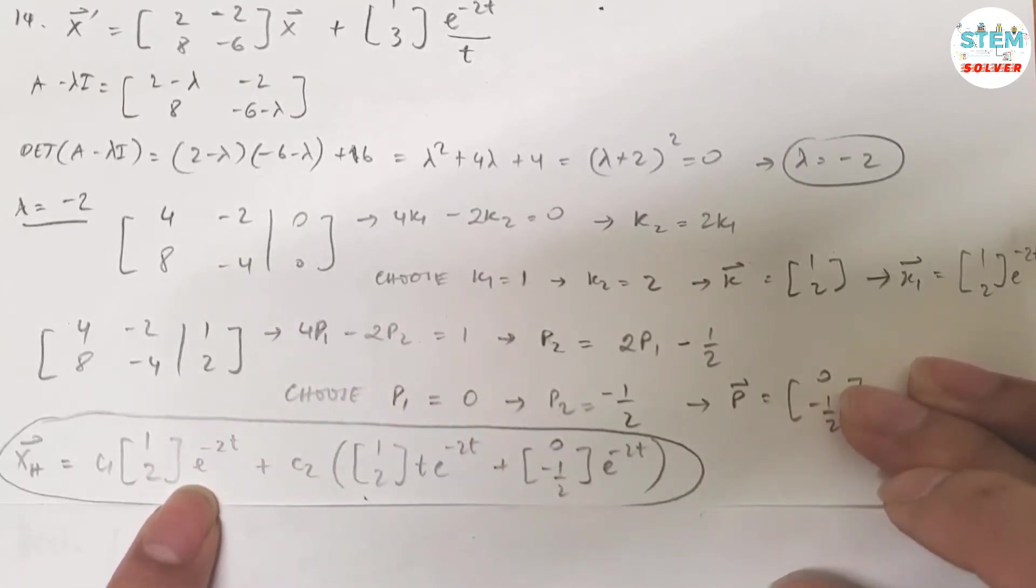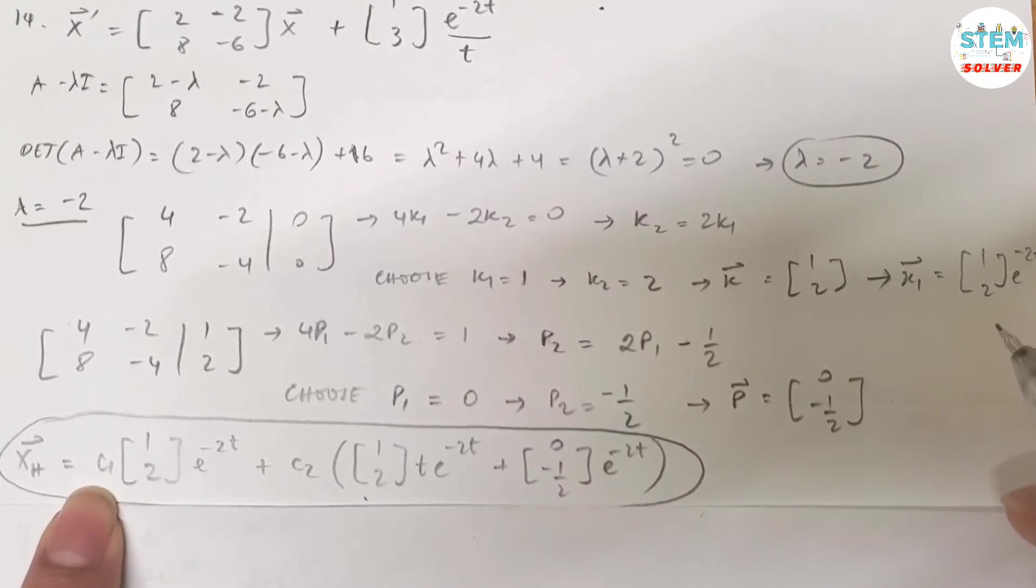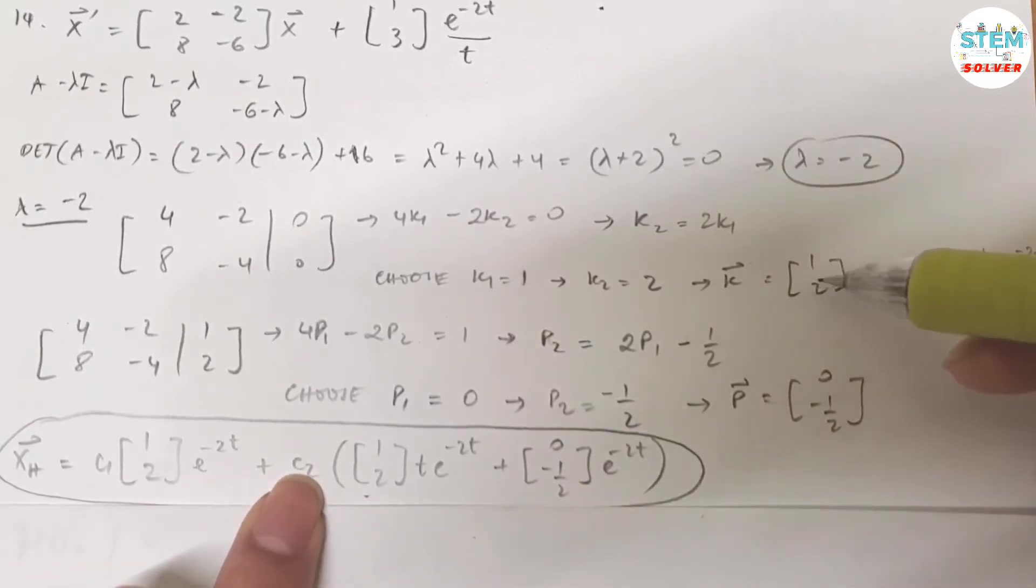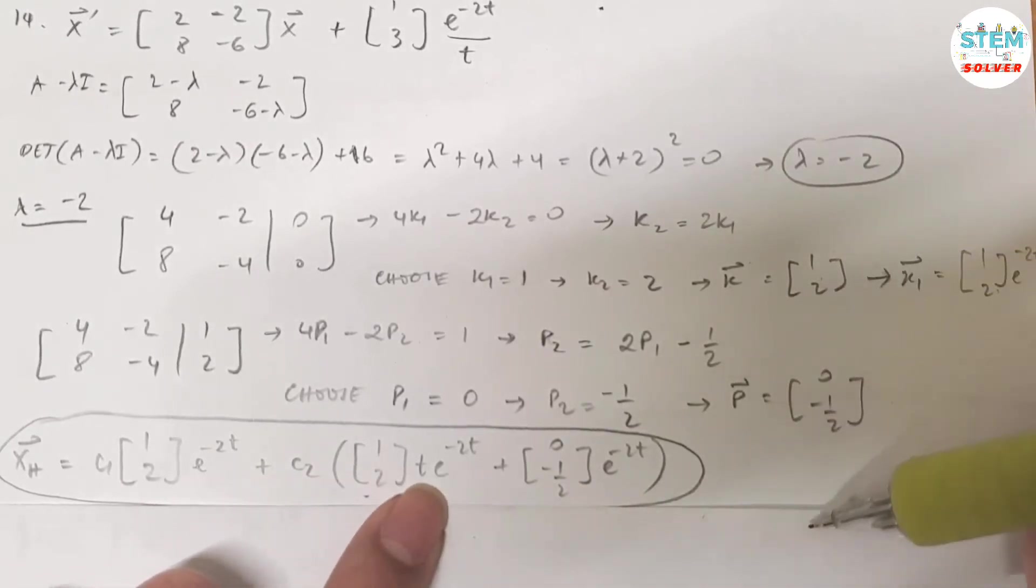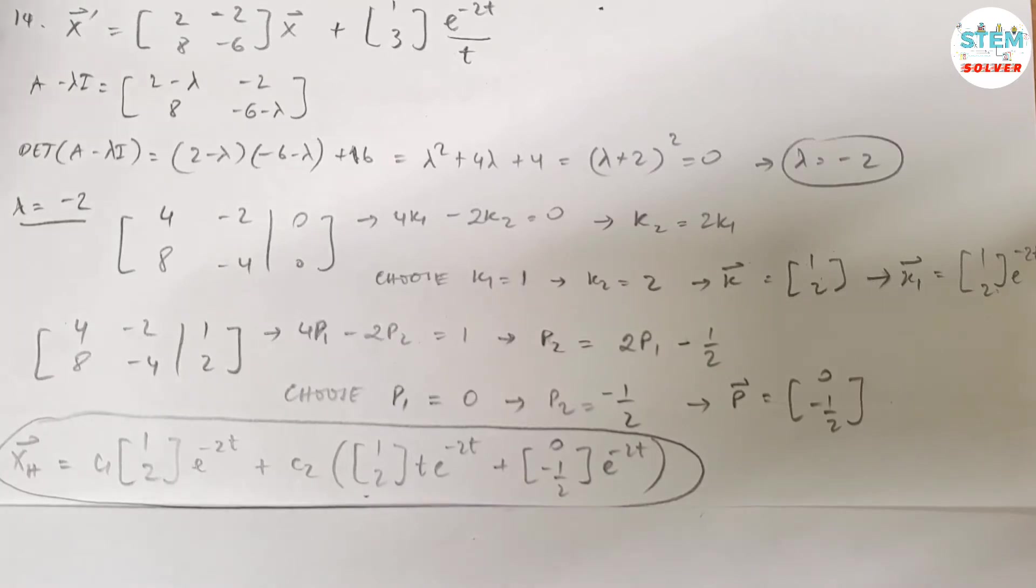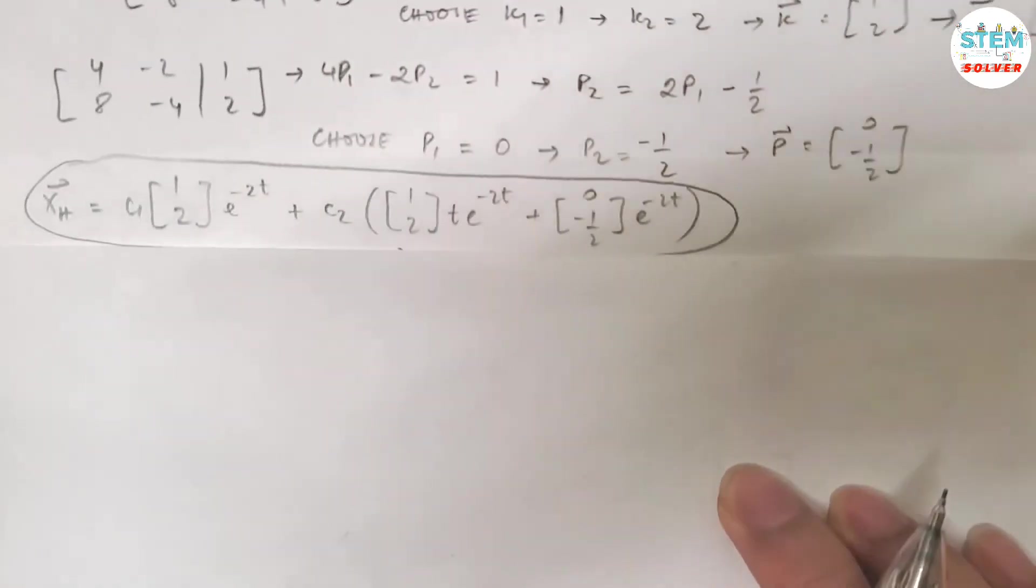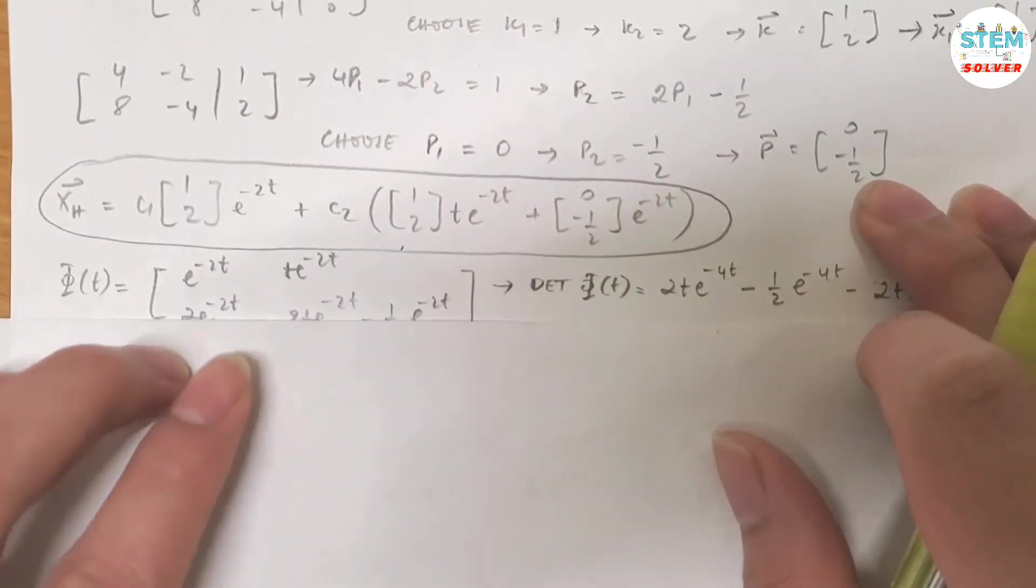Now it's time to write our homogeneous solution. So vector x_h equals c1 times vector x1, which is this one, plus c2 times vector k times te to the negative 2t plus vector p times e to the negative 2t. That is your homogeneous part.